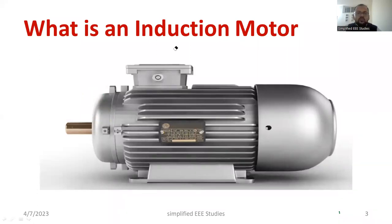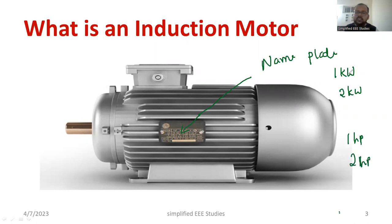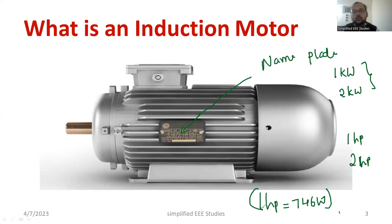You can also get the details of an induction motor using the name plate. Every motor will have a name plate. Induction motors are expressed in terms of kilowatts — one kilowatt, two kilowatts, and so on. In commercial use they mention one HP, two HP like that. So it is expressed in terms of power rating. One HP is nothing but 746 watts. So induction motors are rated in terms of power rating only.